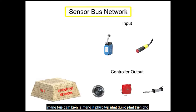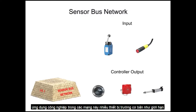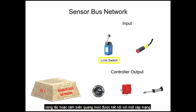Sensorbus networks are the least complex of networks developed for industrial application. In these networks, multiple basic field devices like limit switches or optical level sensors are connected to one network cable.